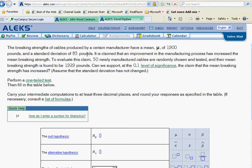Now it is claimed, there's key text there, that an improvement in the manufacturing process has increased the mean breaking strength. To evaluate this claim, 50 newly manufactured cables are randomly chosen and tested and their mean breaking strength is found to be 1,929 pounds. Can we support, at the 0.1 level of significance, the claim that the mean breaking strength has increased?